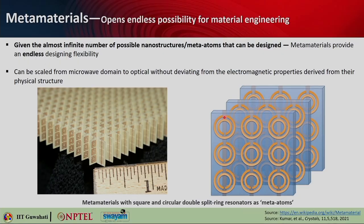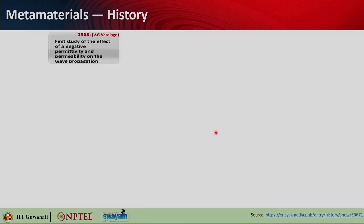The design will decide the electromagnetic properties, not the constituent atoms. For example, if you make a circular split ring from copper versus gold or silver, there will be slight variation, but mainly the property comes from the structure — the double circular split-ring geometry — not so much from the constituent material. There will be slight deviation when changing from one material to another, but the dominant property comes from the physical structure.